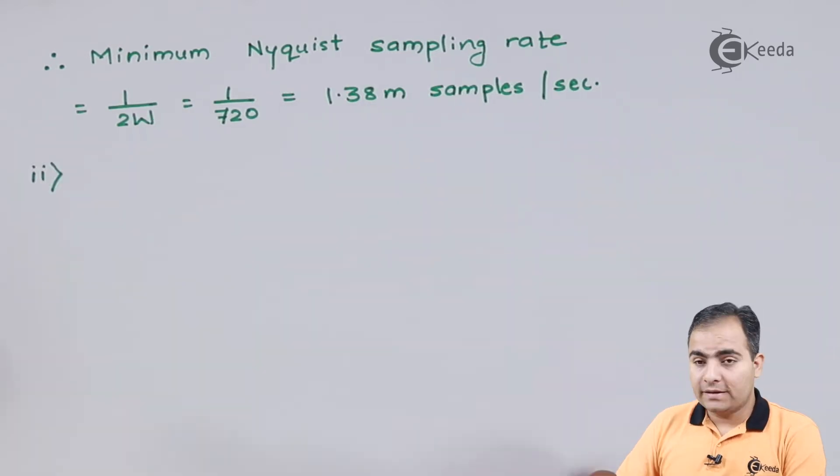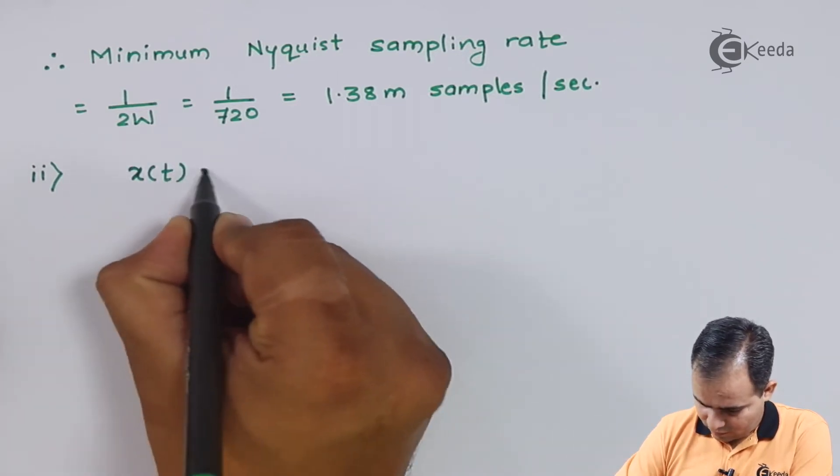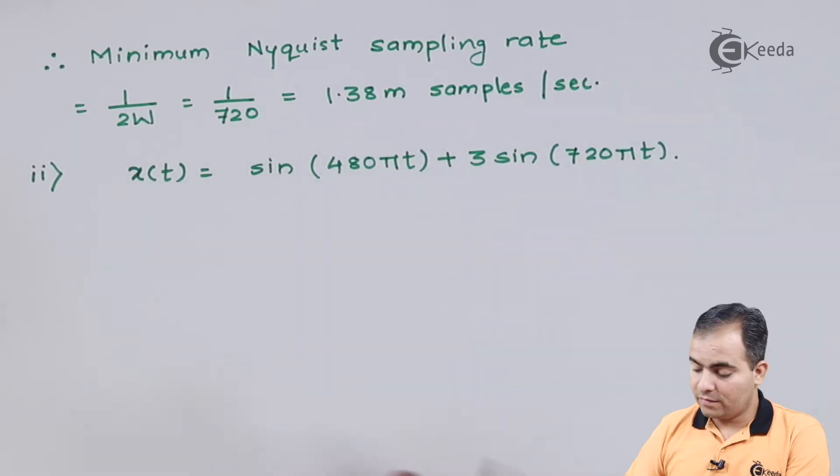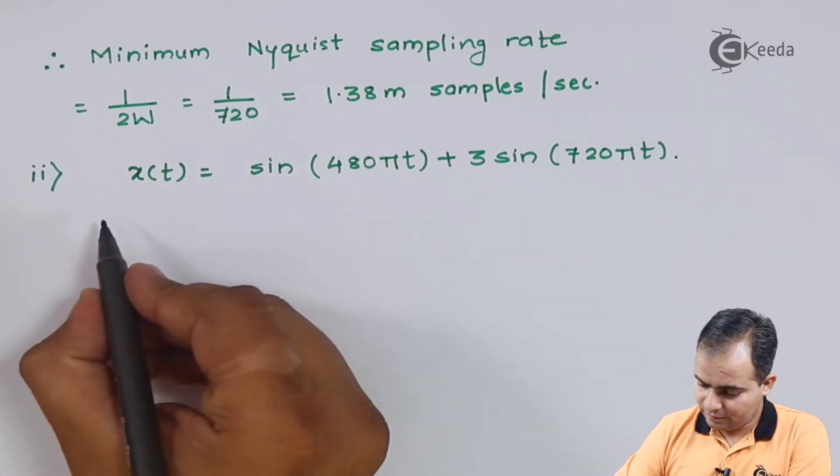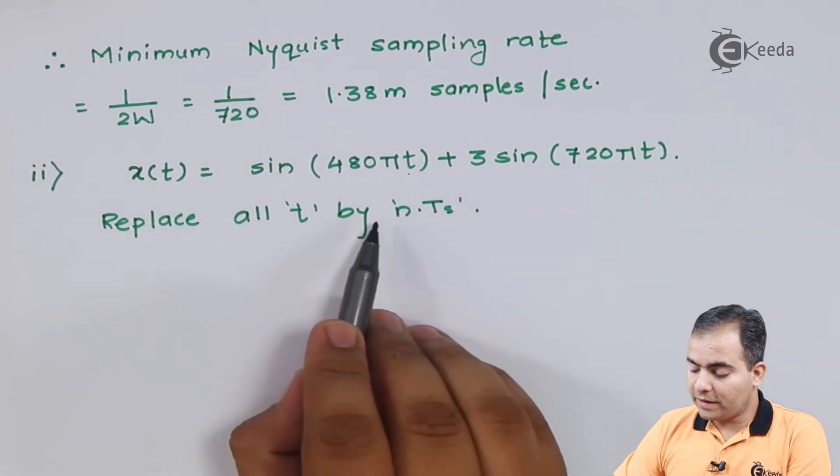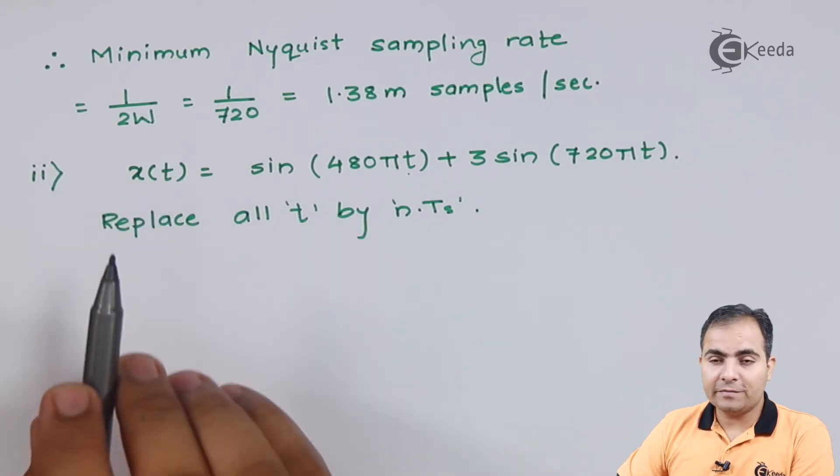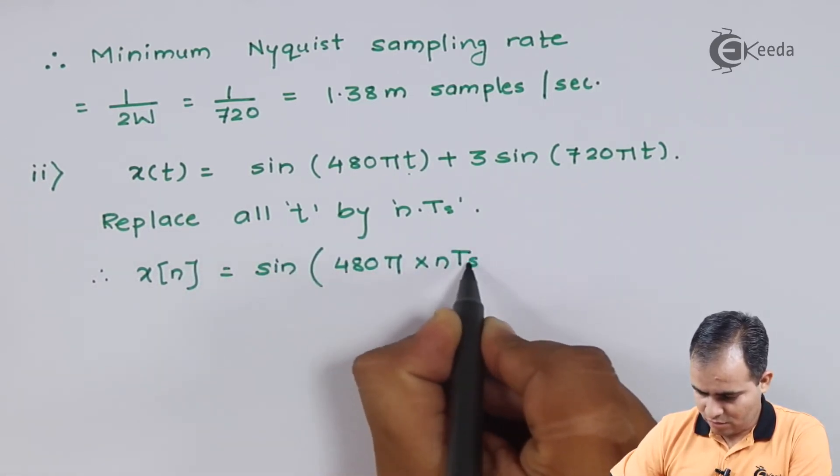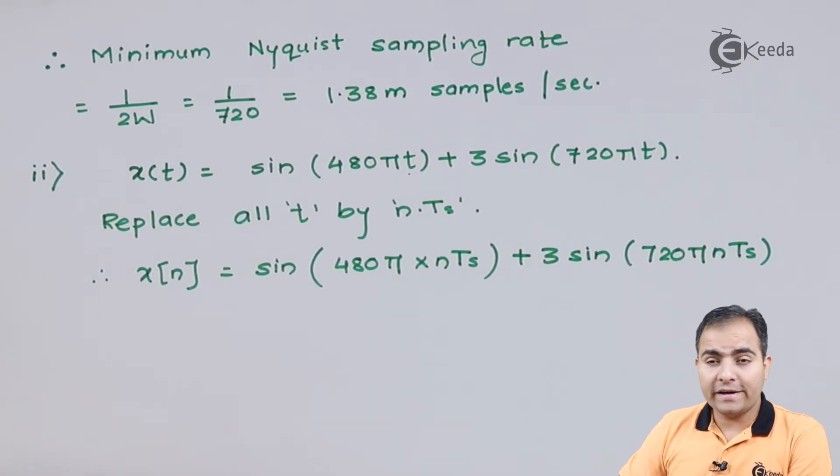Now we will calculate the second part, the folding frequency. We will write our x(t) function first. Here I am going to substitute all this t value by N·T or N/Fs. All this t will be replaced by N·Ts, so my question will be converted into a discrete signal.